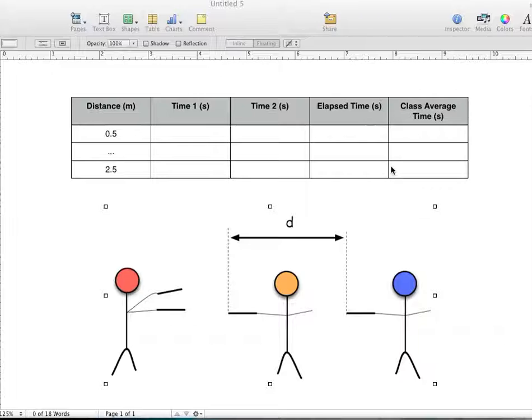Once we get all of our elapsed times, we'll take a class average, which we will then use to determine the class's speed of sound.